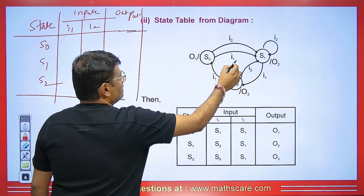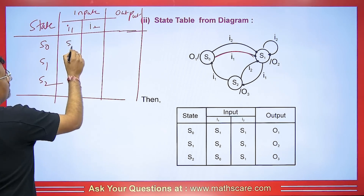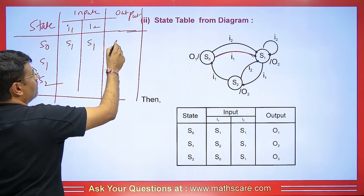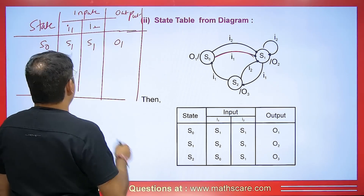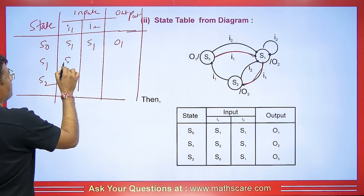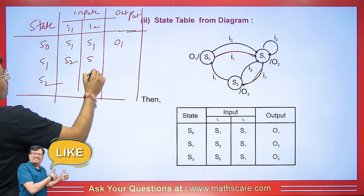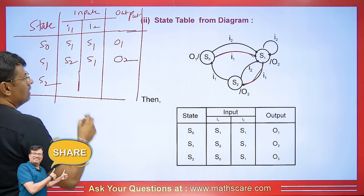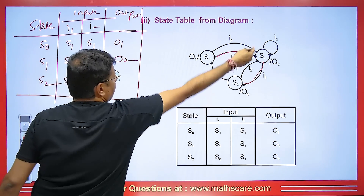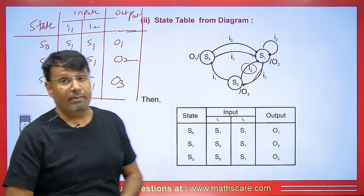S0 is going to S1 with input I1 — so we write S1 with output O1. When S0 goes to S1 with I1, the output is O1. S1 goes to S2 with input I1 and output O2. S1 makes a self-loop with input I2 and output O2. S2 goes to S0 with input I1 and output O3. S2 goes to S1 with input I2 and output O3. This is how we make a table from a diagram.